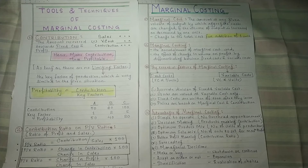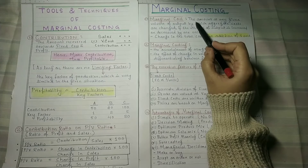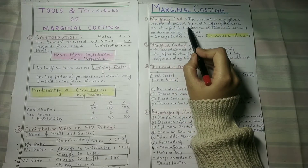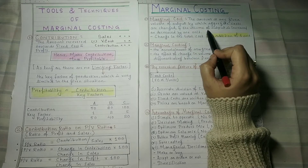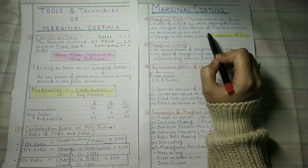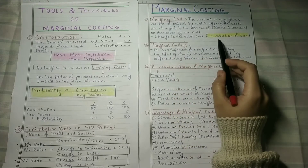First, let us understand what marginal cost is. For example, if you are producing 1000 units and you need to produce one extra unit, how much extra cost will it take? That is known as marginal cost. The definition: the amount at any given volume of output by which aggregate costs are changed if the volume of output is increased or decreased by one unit. Change in total cost for addition of one unit is marginal cost.